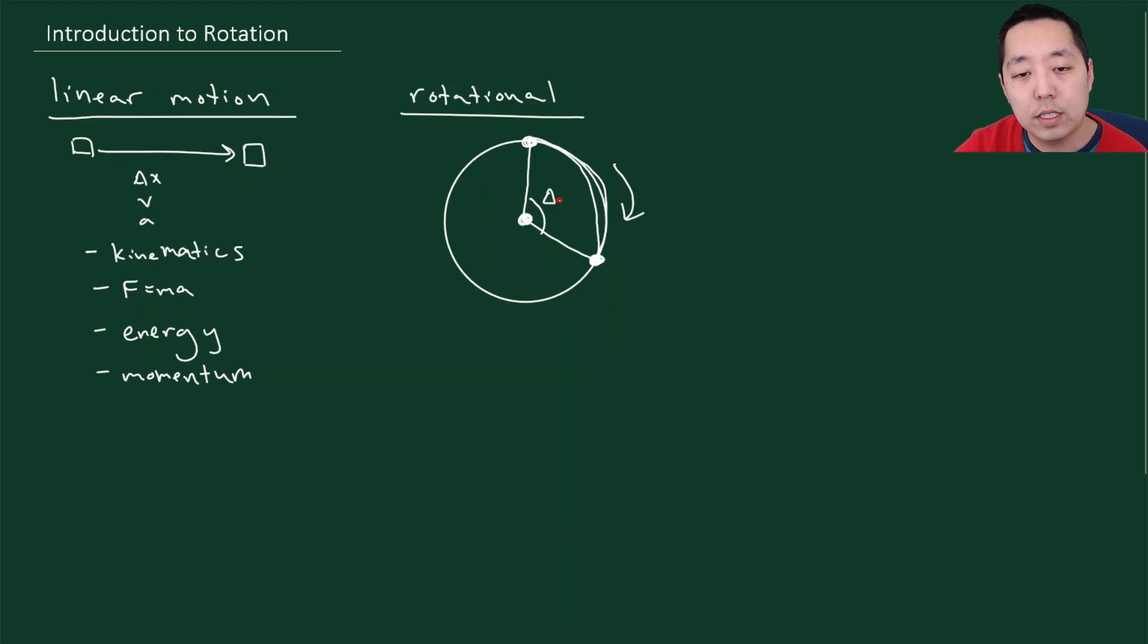This we refer to as its angular position. And we call this delta theta. And that refers to its change in angular position. This is analogous to delta x, which is a change in position.